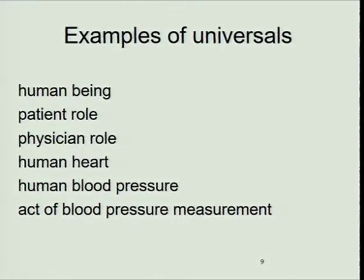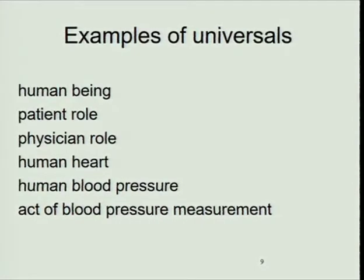Universals are things whose instances instantiate them necessarily at all times — they can't lose them. A rabbit cannot cease to be a rabbit. A rabbit can cease to be a happy rabbit, and it can cease to be a living rabbit, perhaps. But it can't cease to be a rabbit. Rabbit is a universal, or we're going to assume that it's a universal anyway.